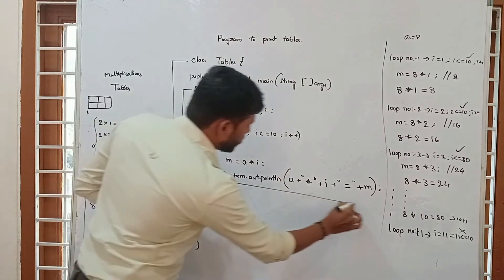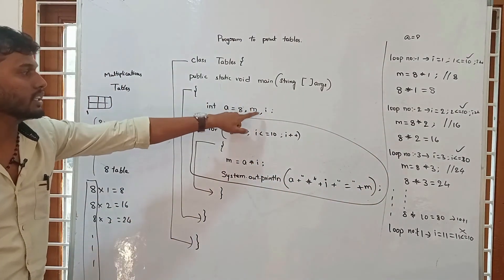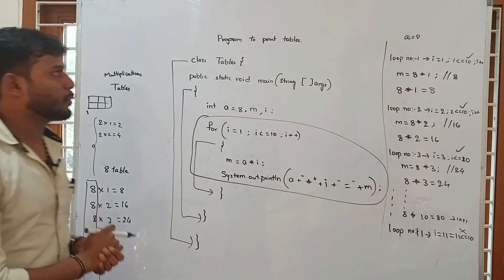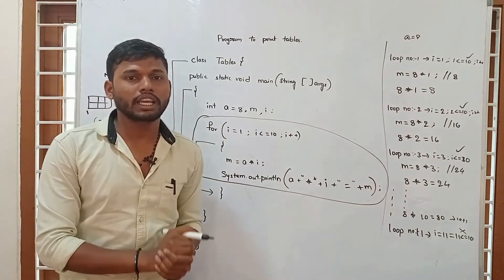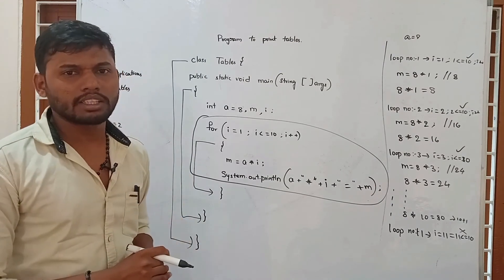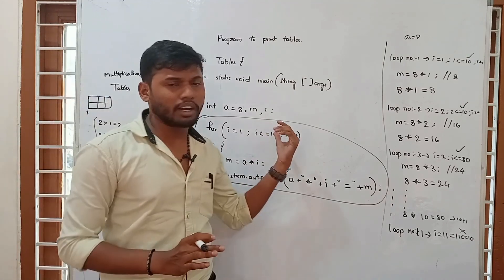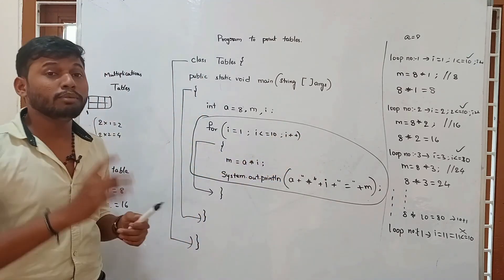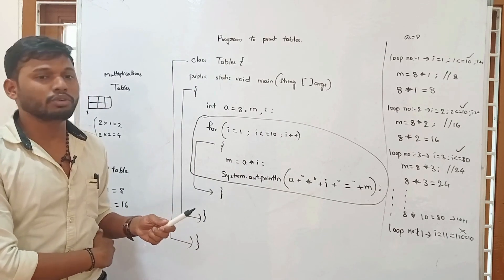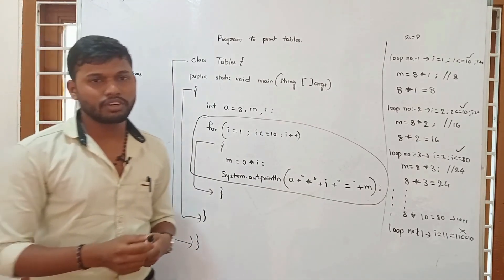This is the highlight of this program — we need to declare predefined variables of this type. This is the program for printing tables, which we can use in a technical interview round. When we practice these types of programs, it will build our confidence level so we can make even more advanced programs. Thank you for watching.